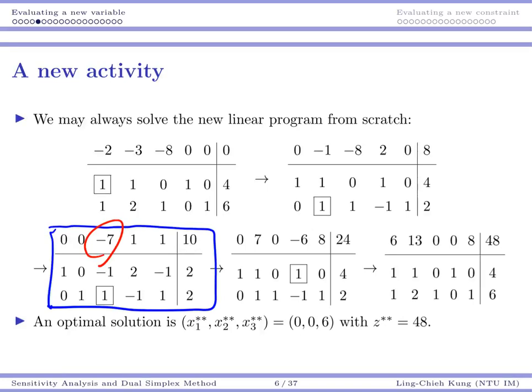The only thing that remains is that even if we get the idea, we need to somehow have a systematic way to calculate this particular number, the reduced cost for our new activity. So we're going to see how to do this.